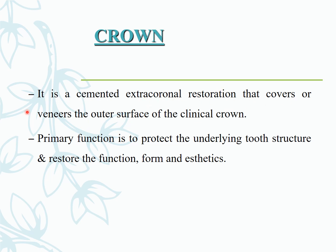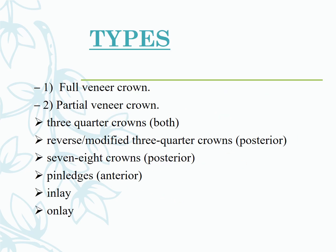The primary function of a crown is to protect the underlying tooth structure and restore function and aesthetics. Types include full veneer crown and partial veneer crown. Under partial veneer crowns, we have the three-quarter crown for posterior and anterior teeth, reverse and modified three-quarter crowns for posterior, and the seven-eighth crown for posterior teeth.